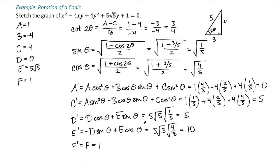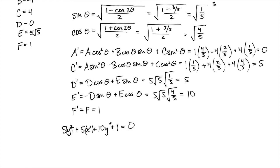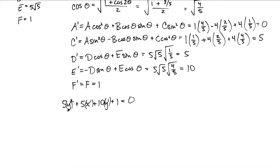Now I plug the new coefficients into the X prime, Y prime equation. A prime is zero, so there's no X prime squared term. C prime is 5, giving 5Y prime squared. D prime gives plus 5X prime, E prime gives plus 10Y prime, and F prime gives plus 1, all equal to zero. We recognize this as a parabola because there's a Y prime squared term but no X prime squared term.